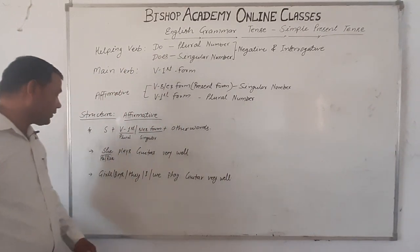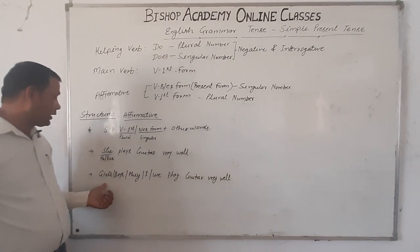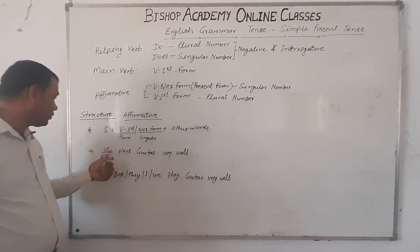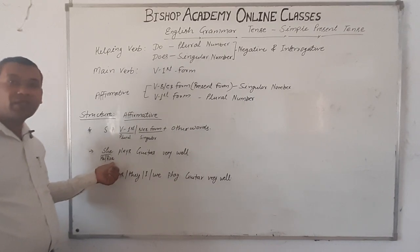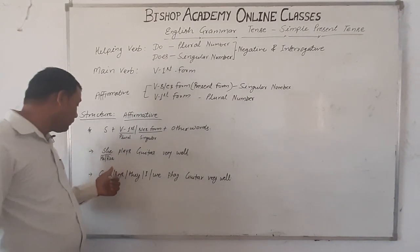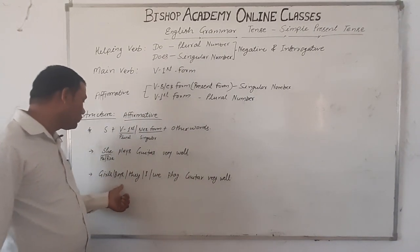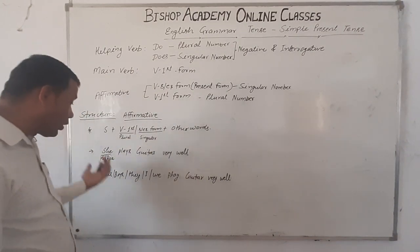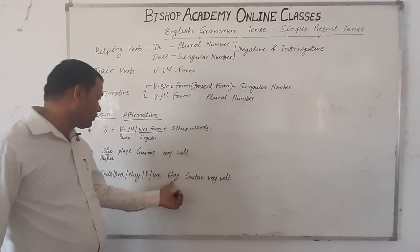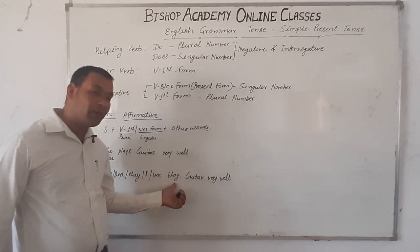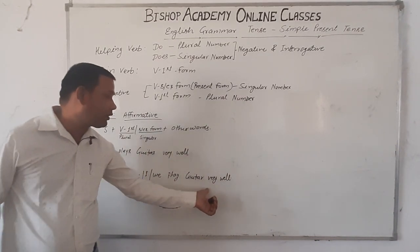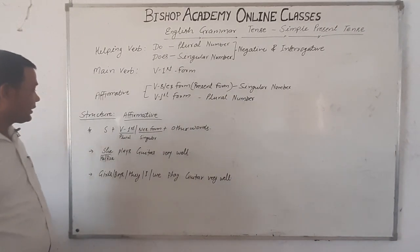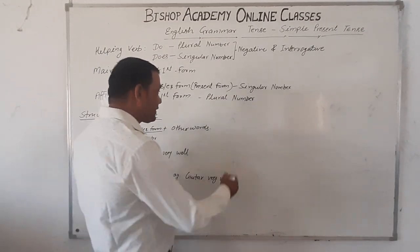So we have explained that when the singular subject — she, he, Ria, or any name, boy — is used, the verb gets 's' added. And when a plural subject — girls, boys, they, I, we — is used, the verb stays in base form. This is the affirmative sentence structure of simple present tense.